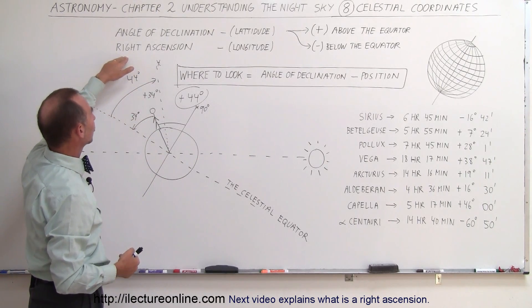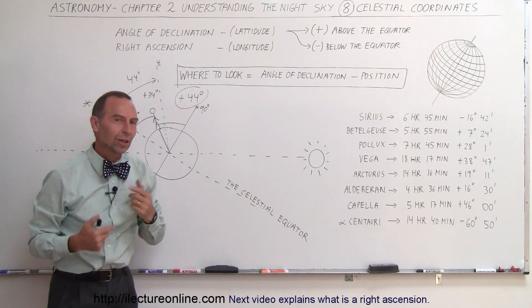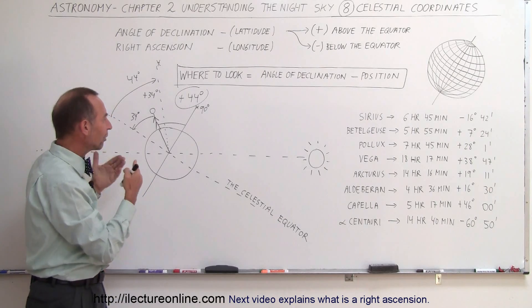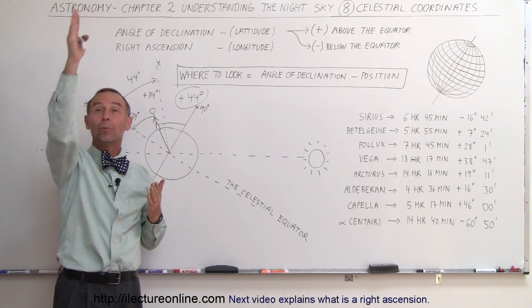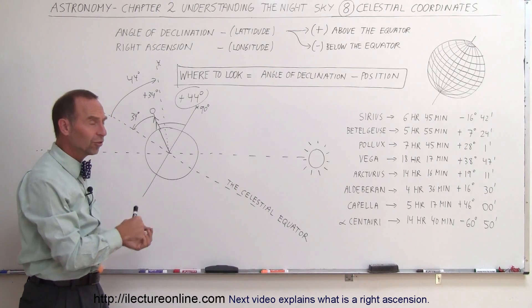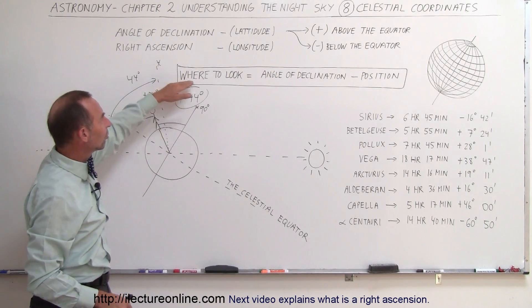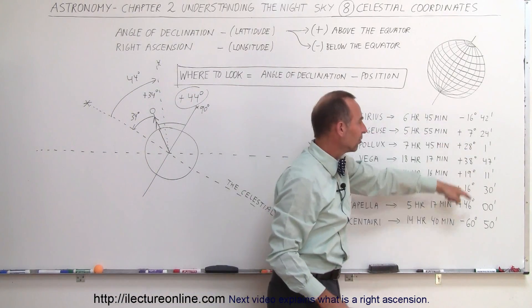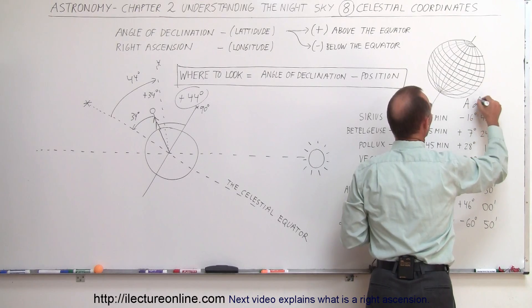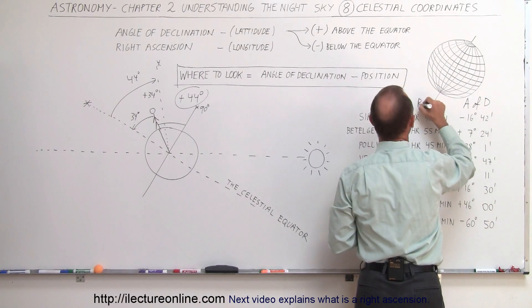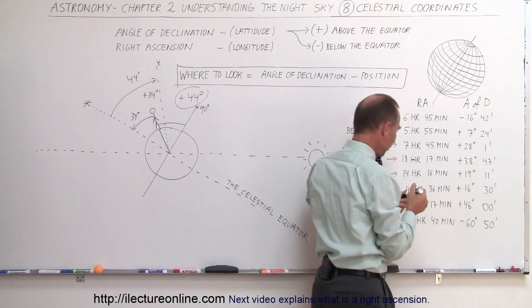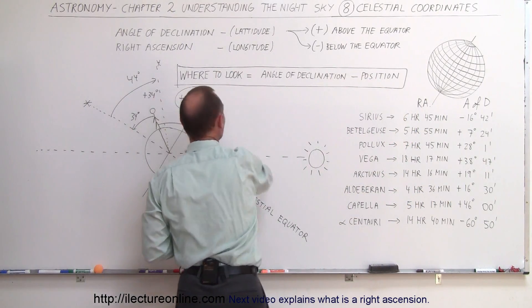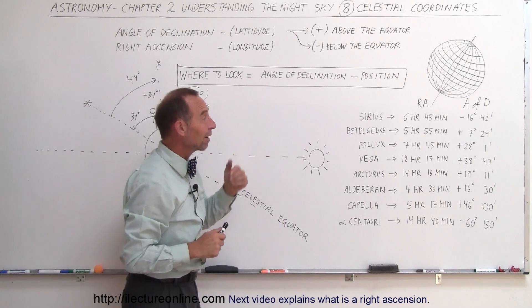Longitude in the celestial sphere is called right ascension, and we'll cover that in the next video. As a general approach for finding stars, we use the angle of declination — we take the star's declination and subtract our own latitude position to determine where to look relative to the zenith.